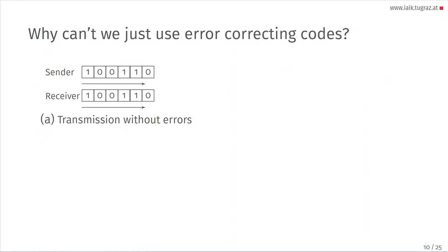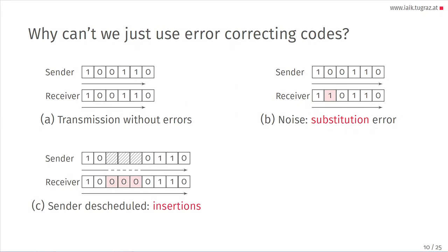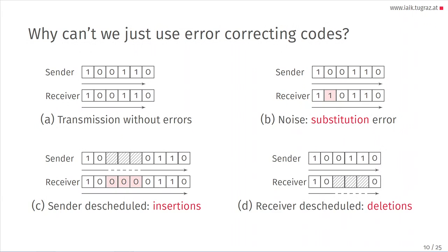Why can't we just use error correcting codes? In a transmission without errors, the sender sends zeros and ones and the receiver gets exactly the same — everybody's happy. With noise on the cache, sometimes a zero is replaced by a one, which is a substitution error — still manageable. The real problem is when the sender and receiver are not scheduled at the same time. If the sender is descheduled, the receiver thinks the sender is sending zeros — leading to insertion errors. If the receiver is descheduled, the sender continues sending and bits are lost — those are deletion errors.